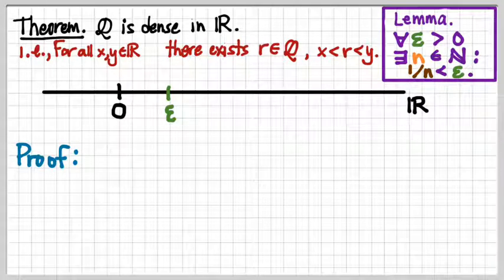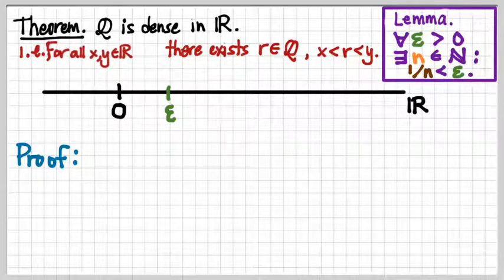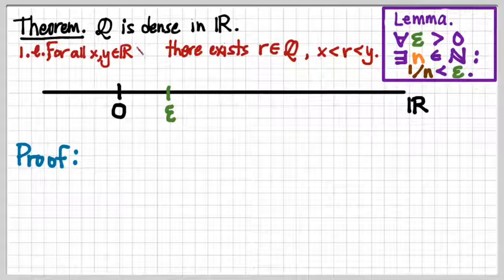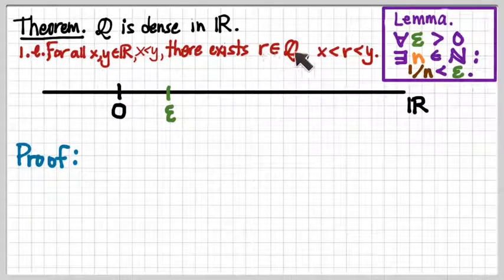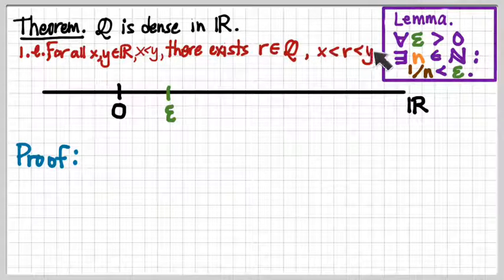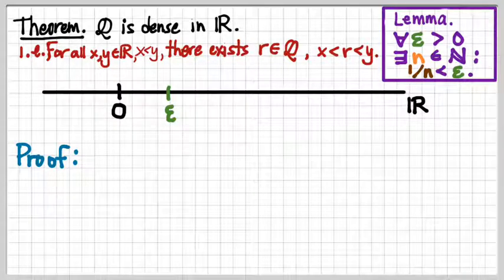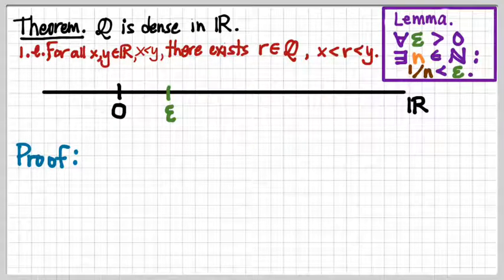We're making the claim that for all x and y that are real, as long as x is less than y — that's part of the hypothesis — we can find a rational number r, an element of the set Q, which is strictly in between x and y, belonging to the open interval from x to y. That's just a restatement reminding us what the burden of proof is here, using the definition of density.